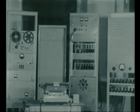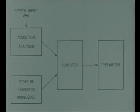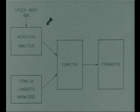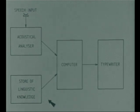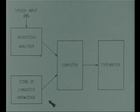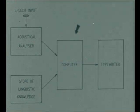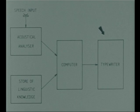The following diagrams show the principles of operation and the component parts of the machine. The sounds are recognized by combining information from two sources. The acoustical analyzer examines the characteristics of the speech wave. The store of linguistic knowledge gives information about digram frequencies. Every time a speech sound is fed into the machine, the computer combines the two types of information and decides what sound is to be recognized. It then instructs the typewriter to type the appropriate symbol.